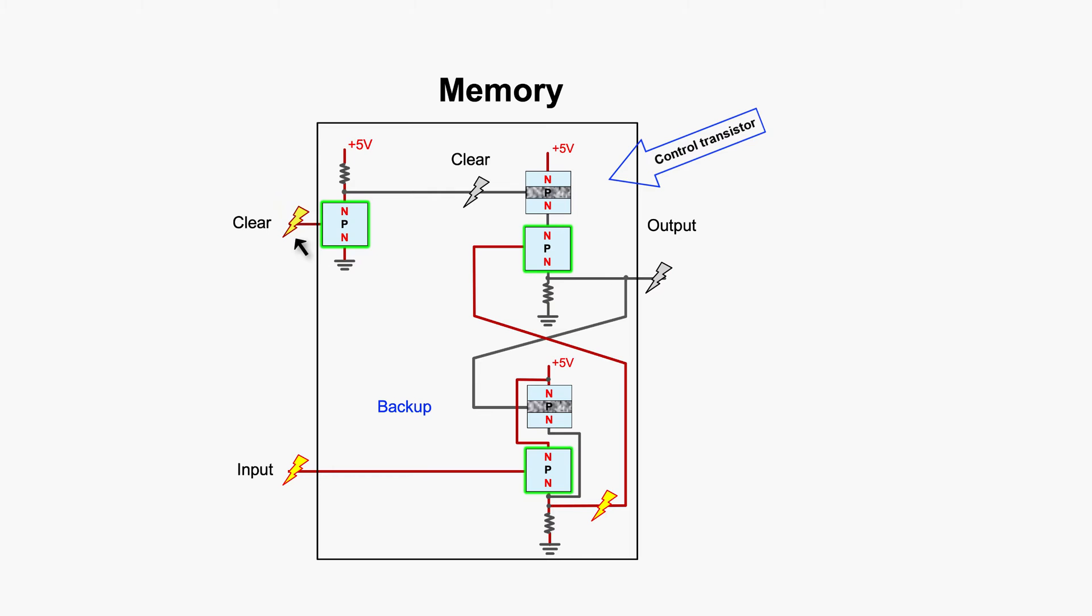But if you leave it off, by default, the inverter will output high voltage, because it's connected to the high voltage end, keeping the control transistor conducting, allowing input to pass and stay.